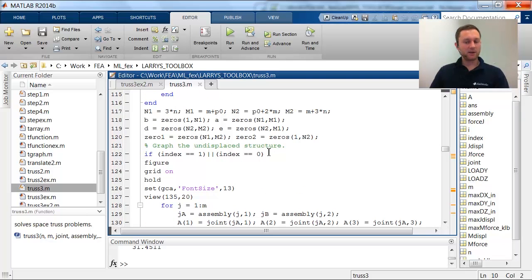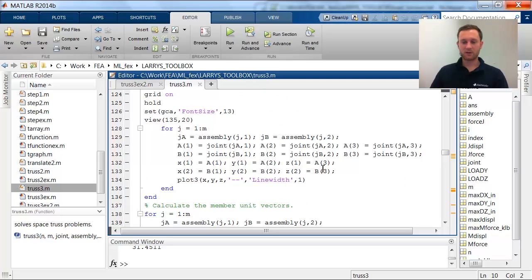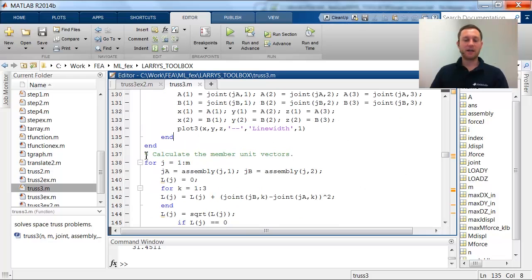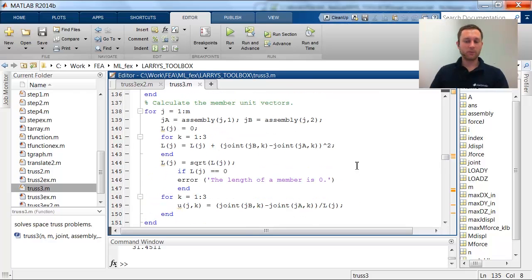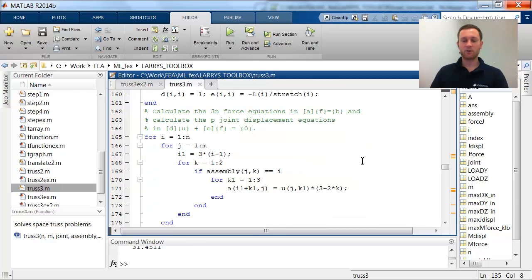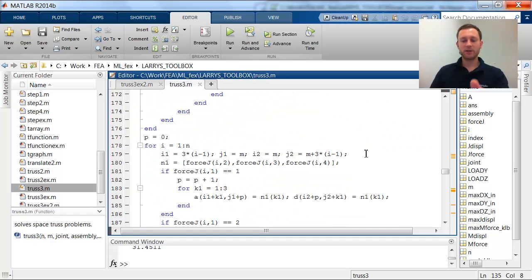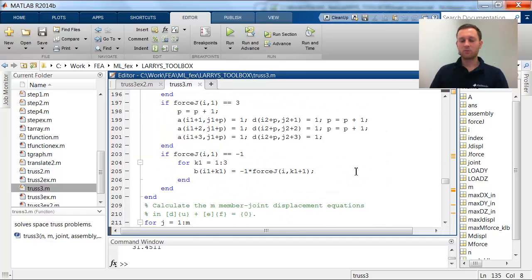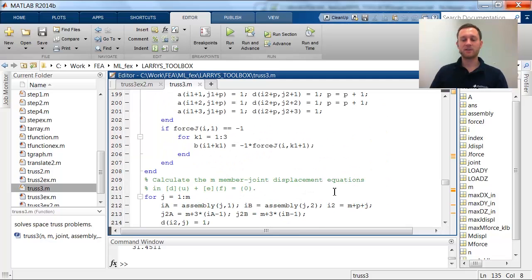And then he's starting to set up the system. We see here that he is displaying the undeformed structure that's done with a plot 3 command. And then he calculates all the entries, puts them together in a system matrix. This is done over the next few lines for one member, member displacement equation, setting all that up.